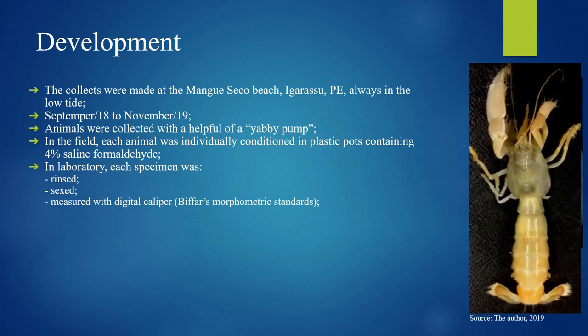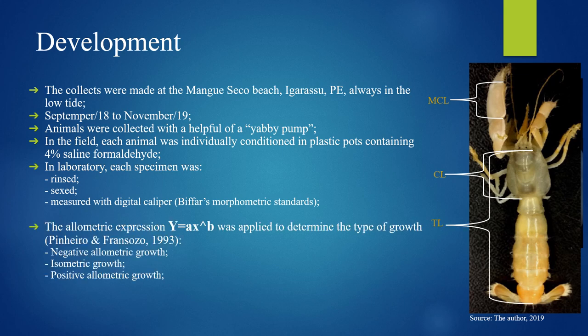and measured with a digital caliper, following morphometric standards for major cheliped length, the chela length, and the total length. The allometric equation was applied to determine the type of growth, which could be negative allometric growth, isometric growth, or positive allometric growth. The carapace length was used as an independent variable for all regression analyses.